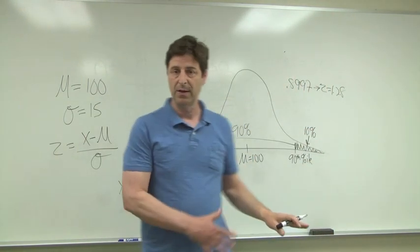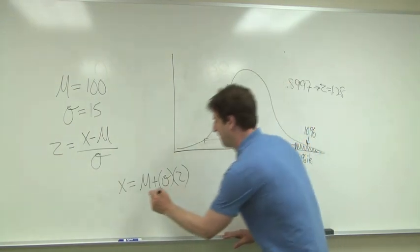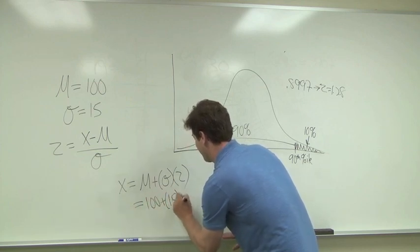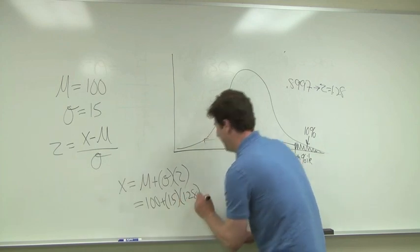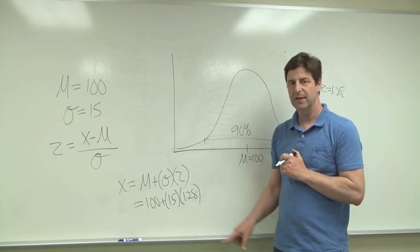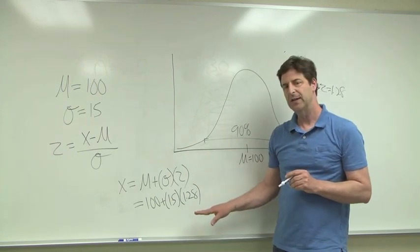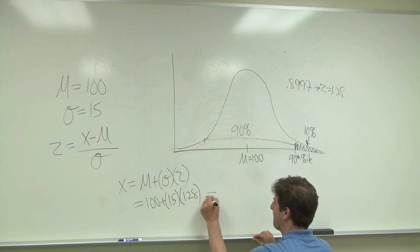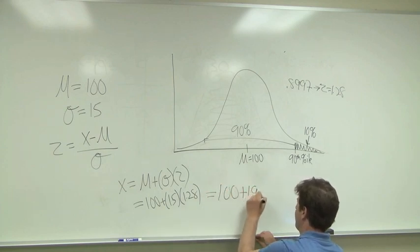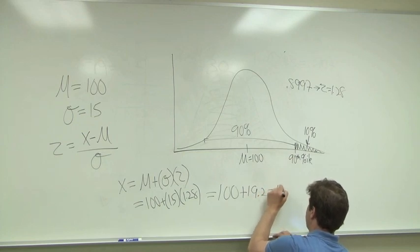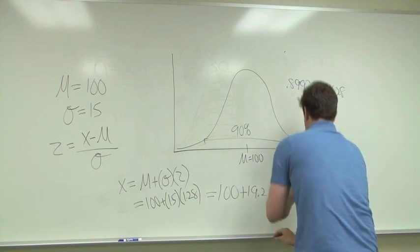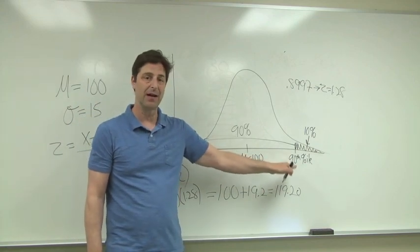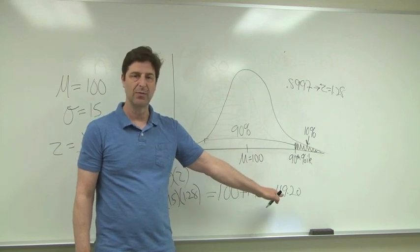Now that we know our Z-score, we plug it in to this formula right here. And we've got to multiply 15 times 1.28. So 15 times 1.28 equals 19.2. And we find that the raw score that's associated or marks the 90th percentile in this normal distribution is 119.20.